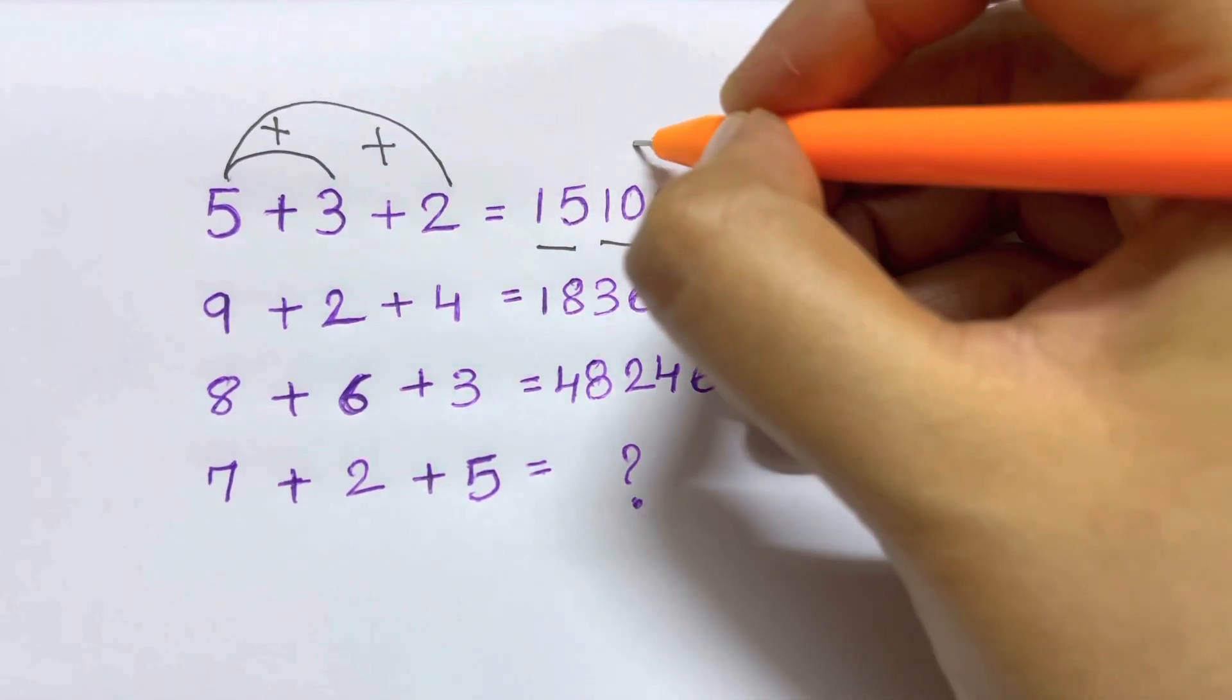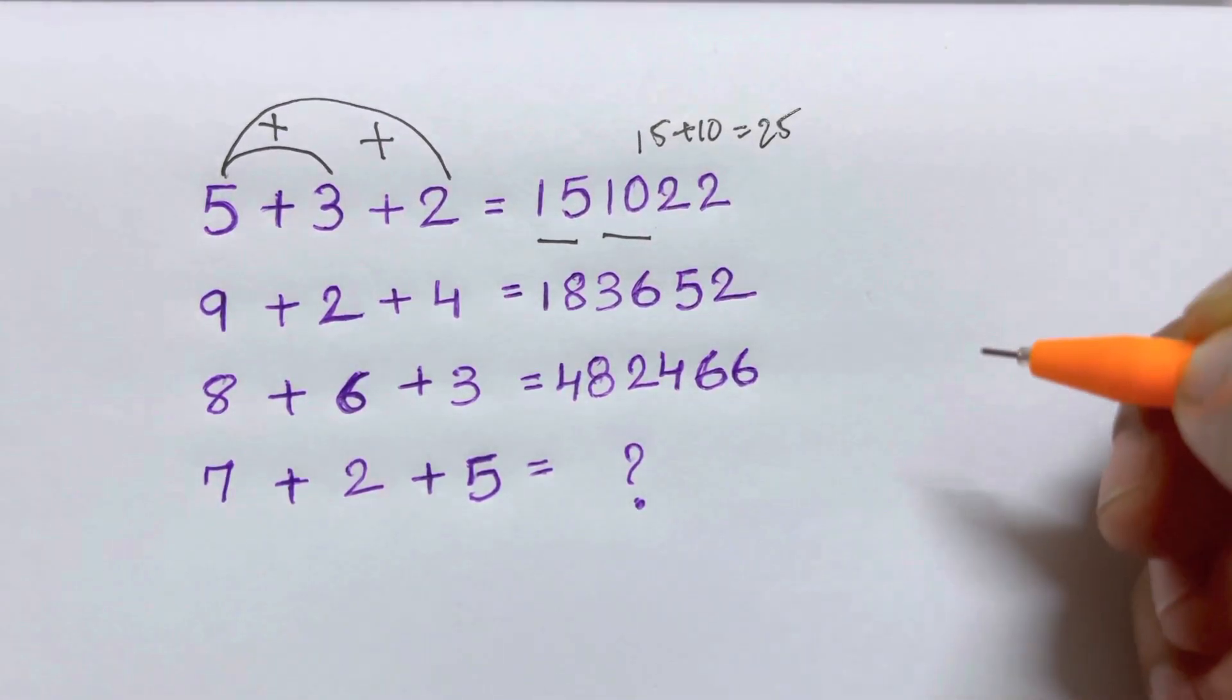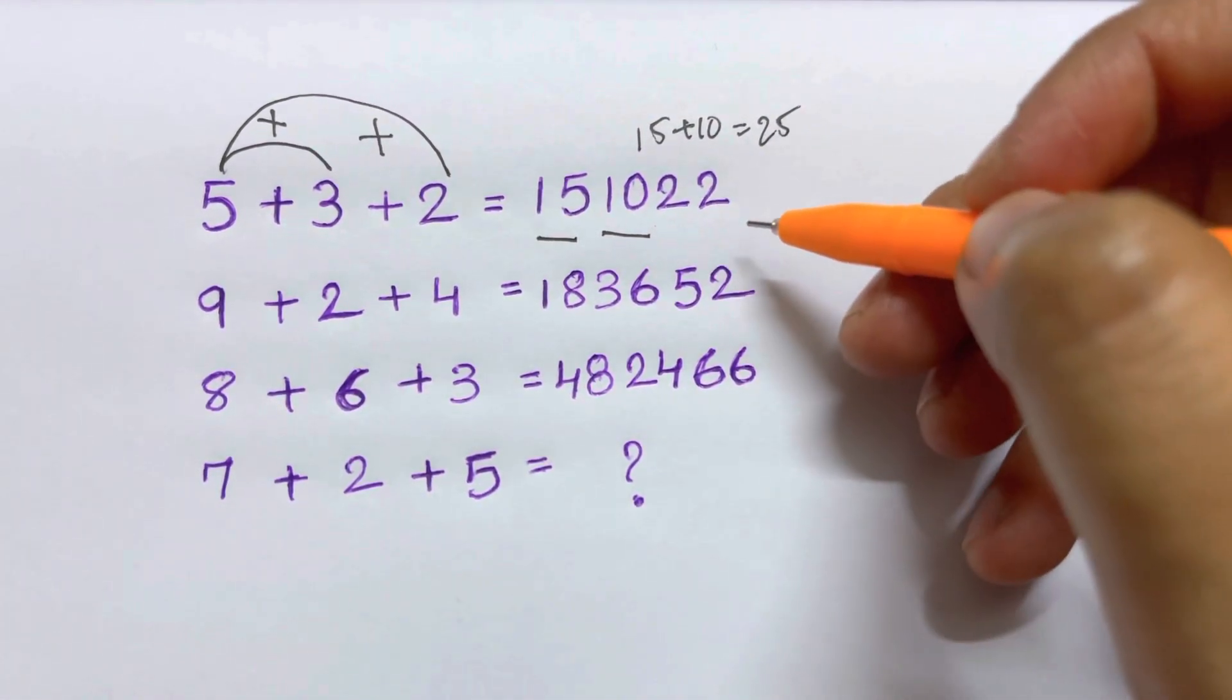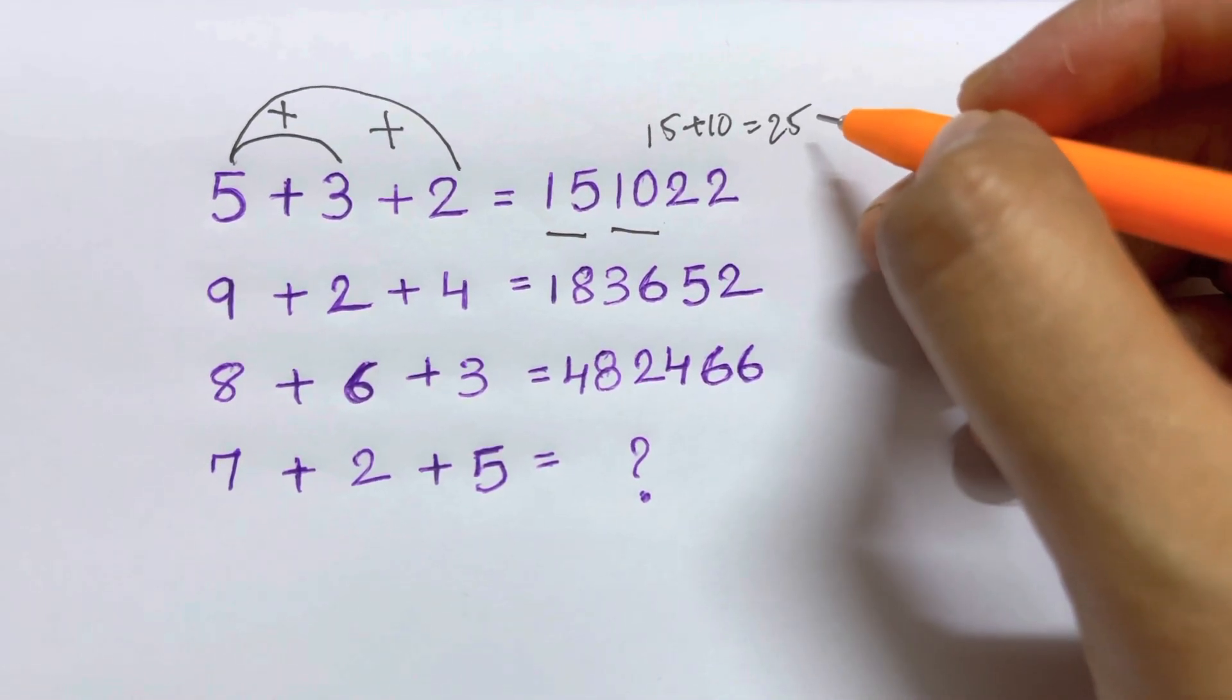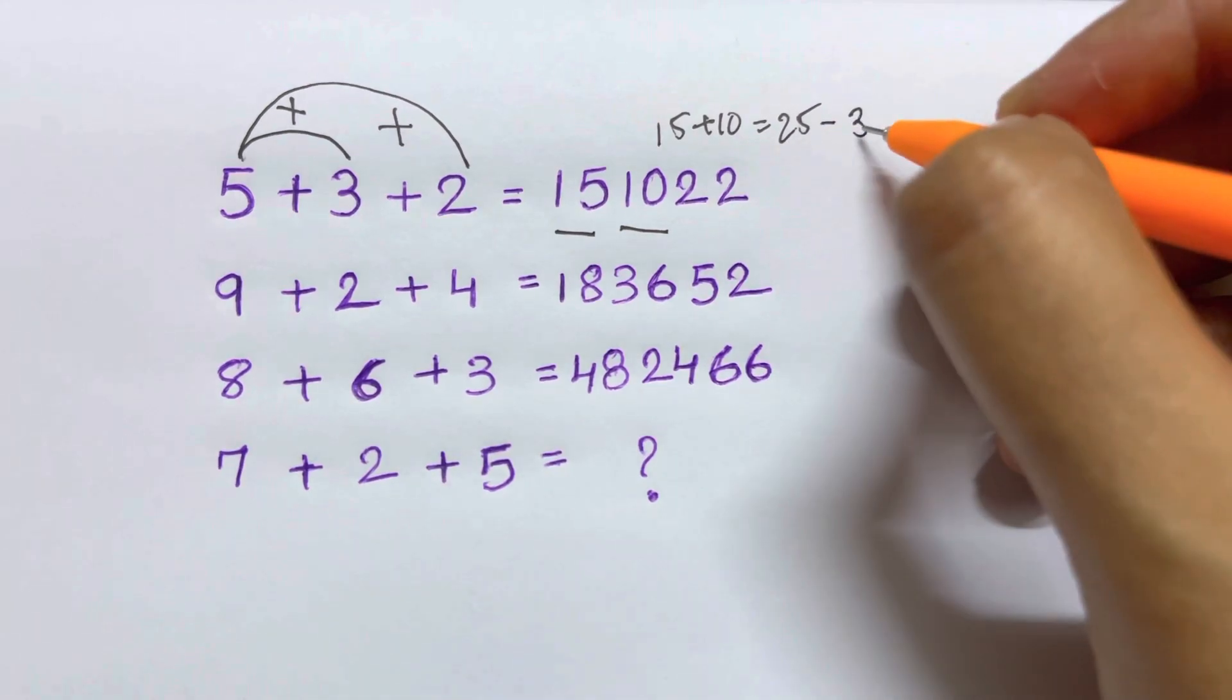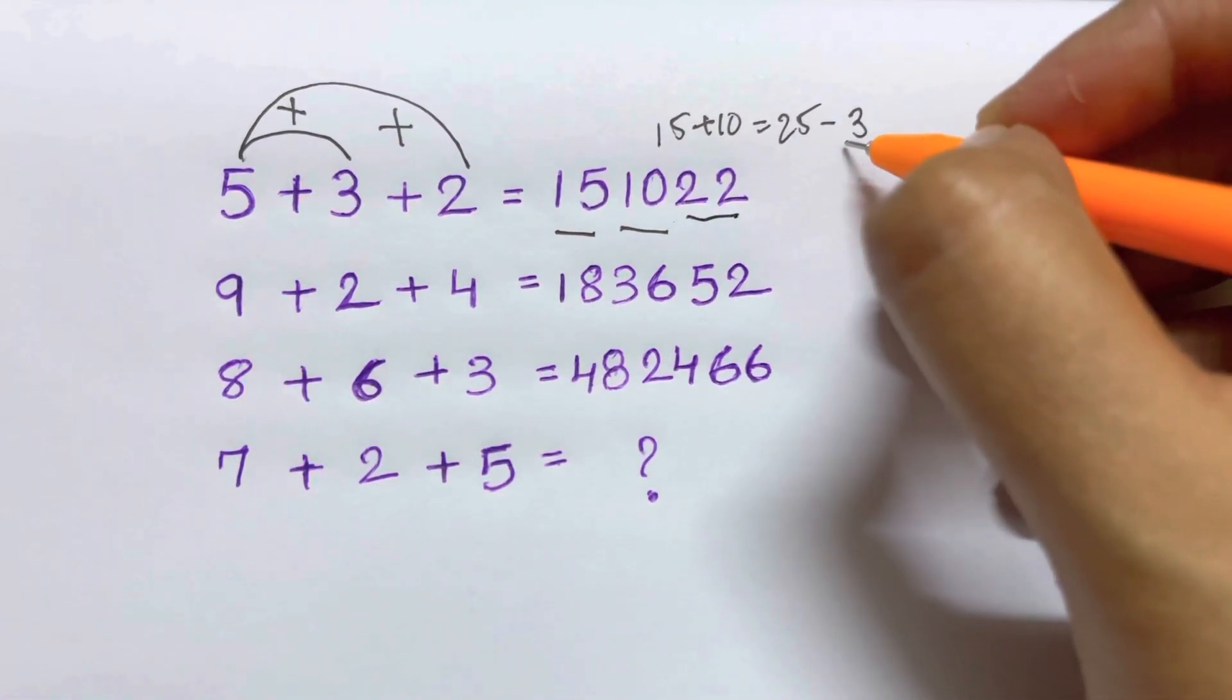For 22, what I can think of is if I add 15+10, I'm going to get 25, and 25 is not equal to 22, so how can I make it equal? I'm just going to subtract it with 3 digits. So 25-3 can give me 22.